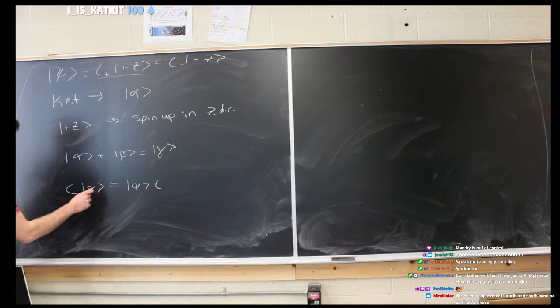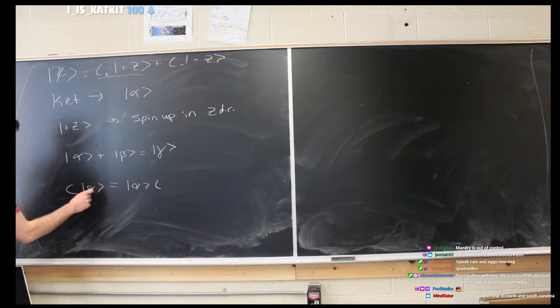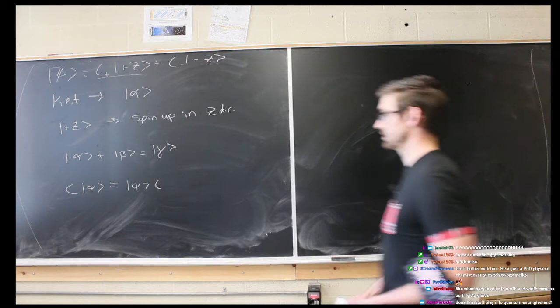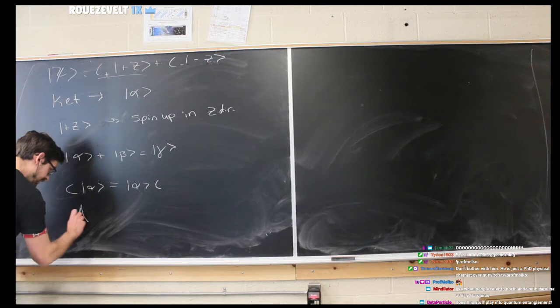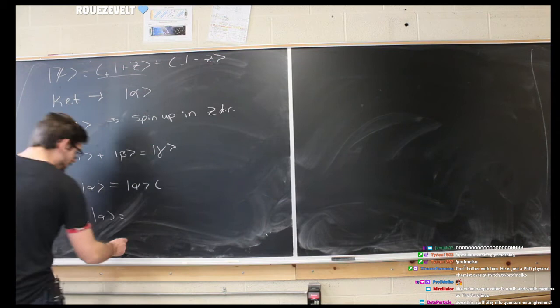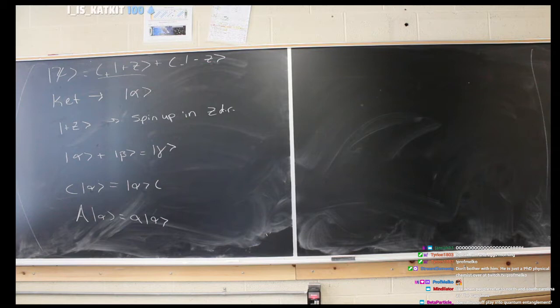Complex numbers can be multiplied by states. For instance, when we're in the z-basis and want to write the z states in terms of the y states, you'll have complex numbers in that system as well. Numbers can be moved around, but then there are things like operators — operators cannot be moved around. They are applied to a state on the right-hand side, a ket on the right-hand side.